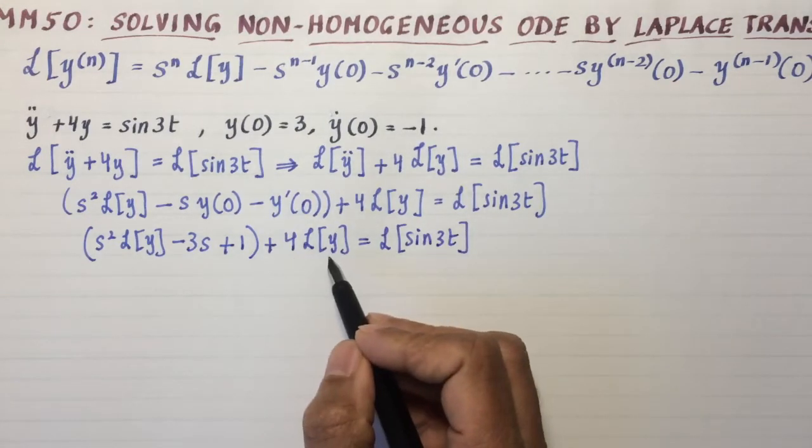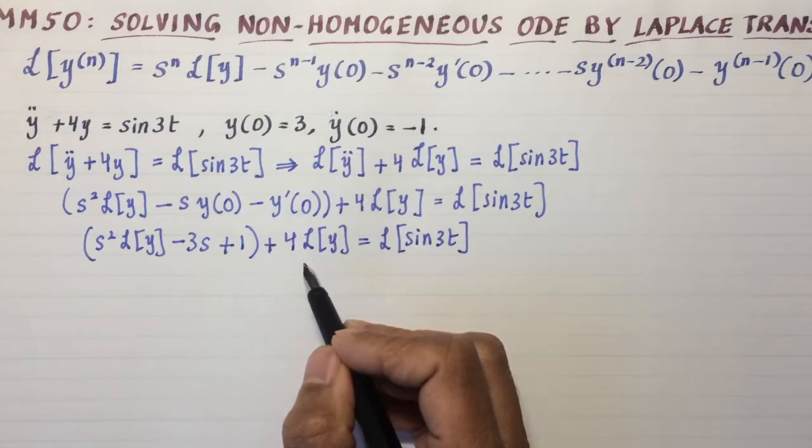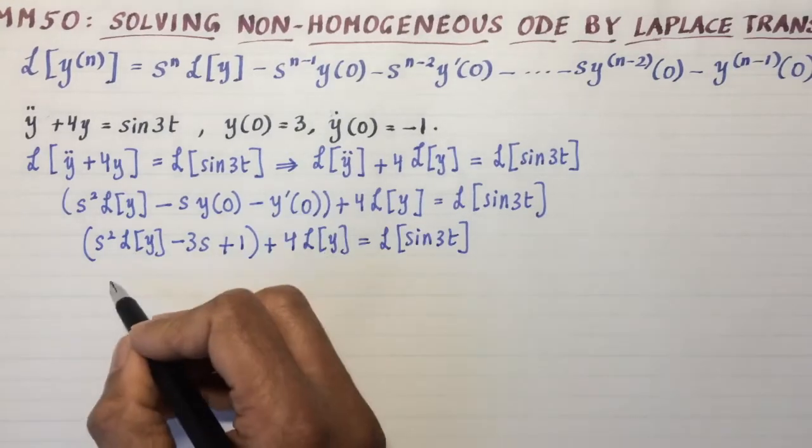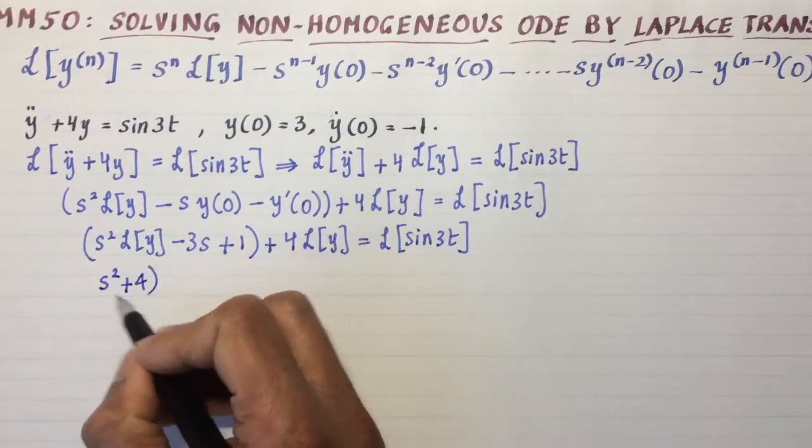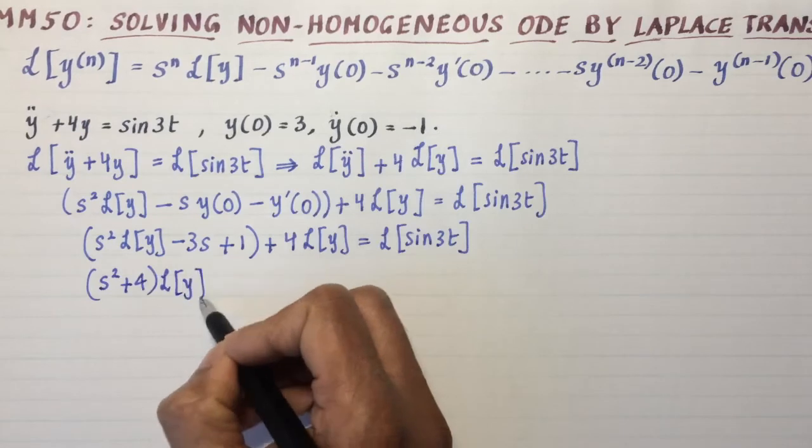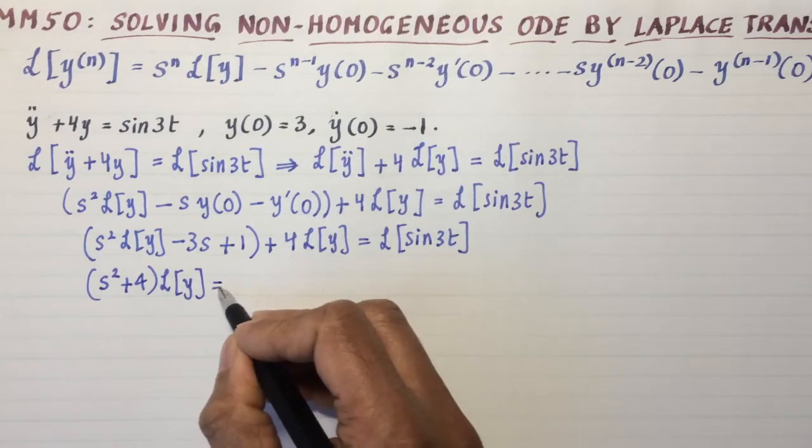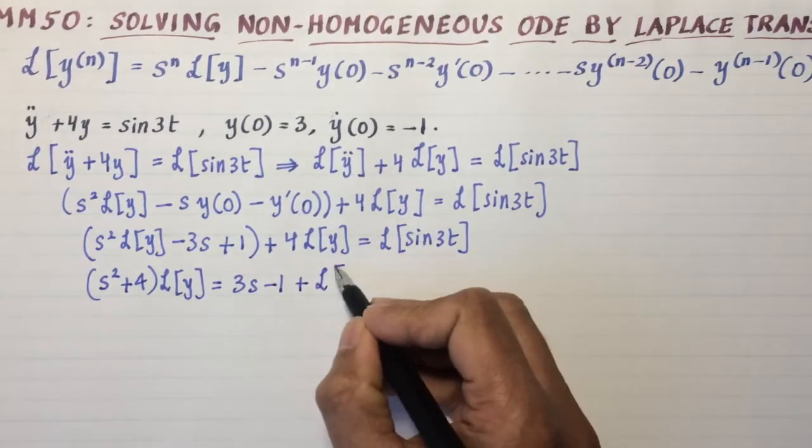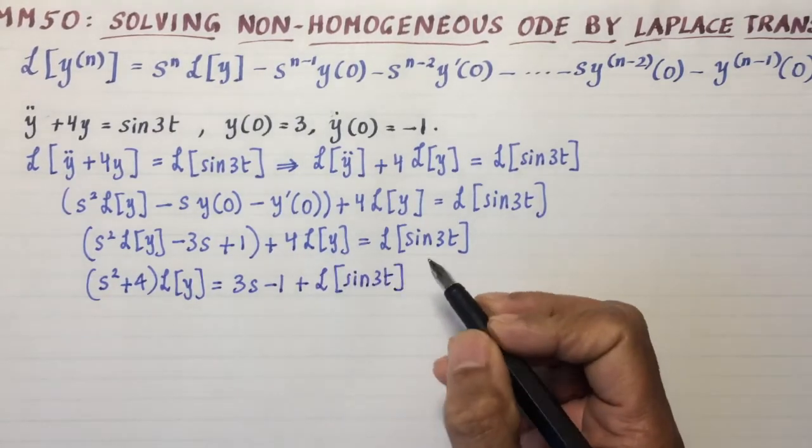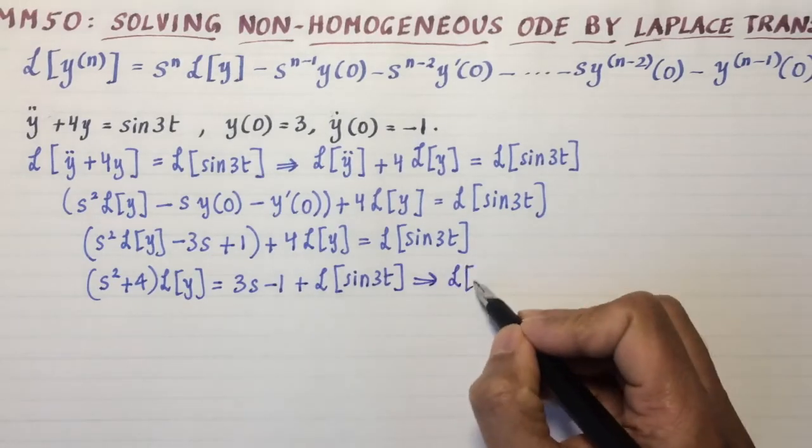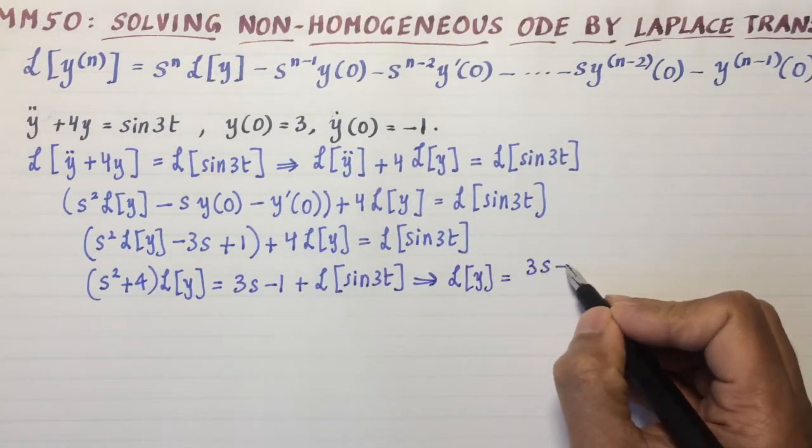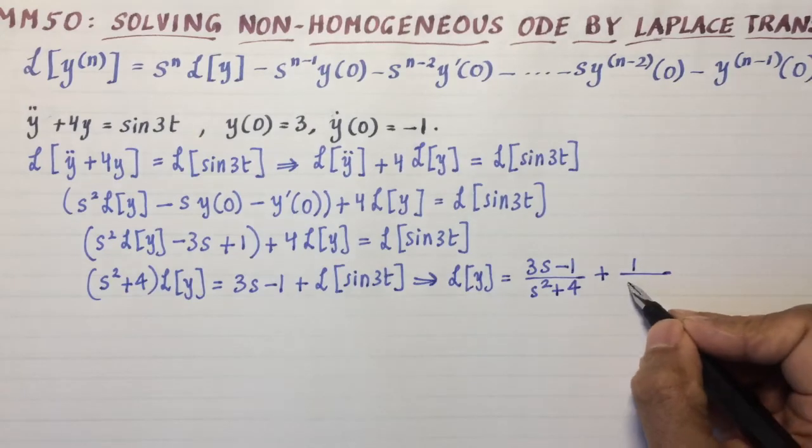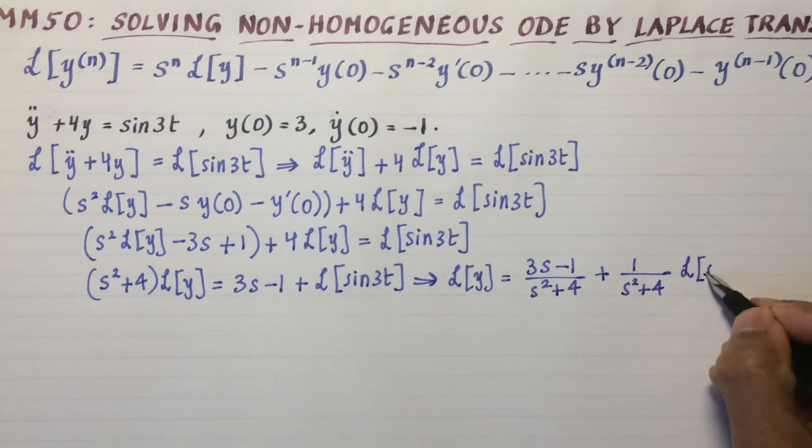Plus 4 times the Laplace transform of y equals the Laplace transform of sine 3t. The Laplace transform of y is what interests us because at the end, we have to find the inverse Laplace transform to find the y. So I'll solve for Laplace transform of y. So I get (s squared plus 4) Laplace transform of y equals 3s minus 1 plus Laplace transform of sine 3t. This can be isolated and I get the Laplace transform of y as (3s - 1)/(s squared plus 4) plus 1/(s squared plus 4) times Laplace transform of sine 3t.